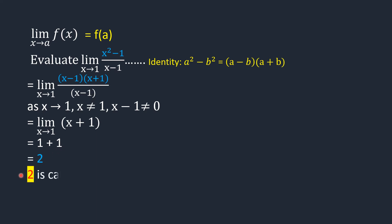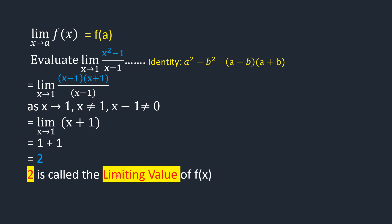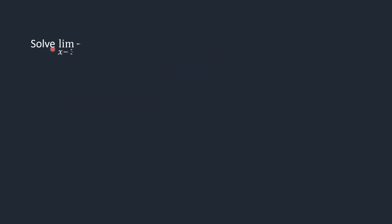Here, 2 is called the limiting value of f(x). Now solve: limit of x squared minus 9 over x minus 3 as x approaches 3. If we put x equals 3 in the denominator, it becomes 0. Therefore, this function becomes undefined at x equals 3.